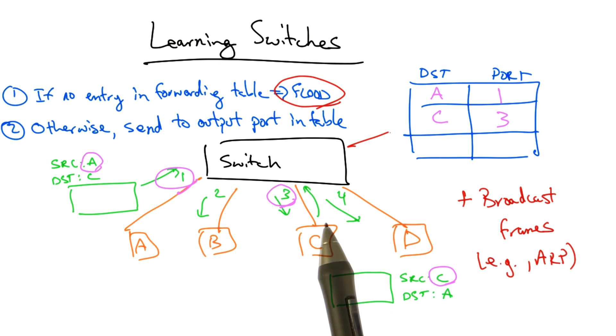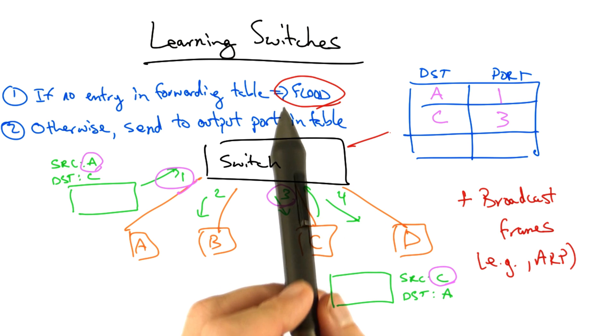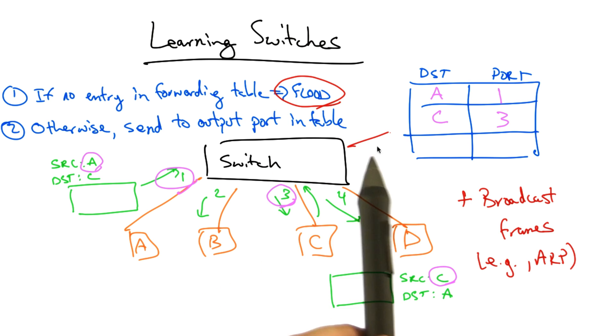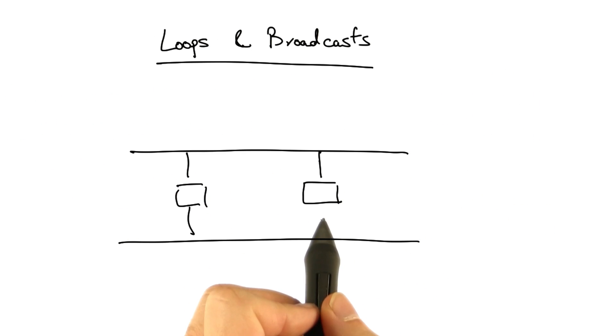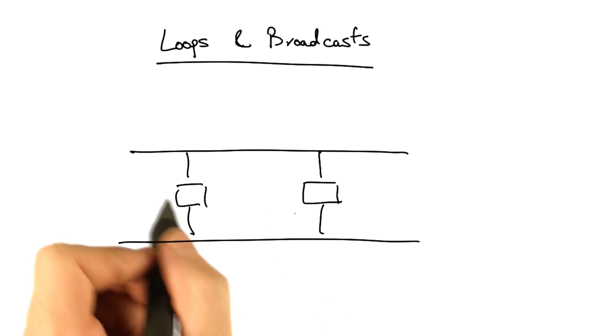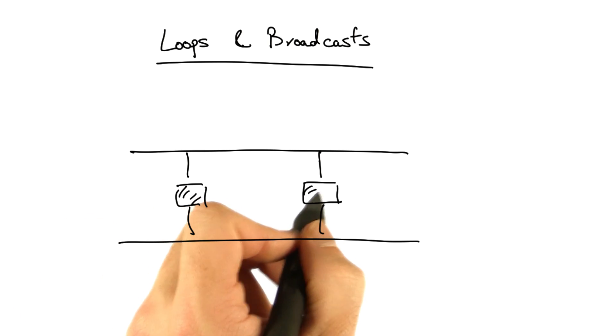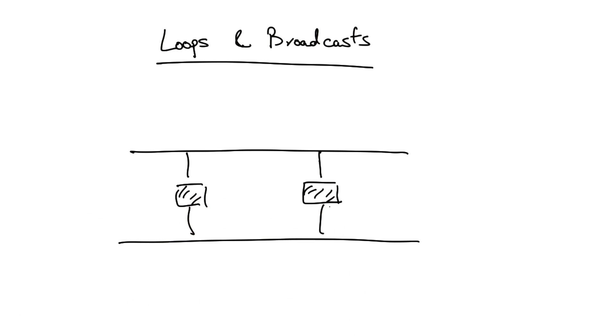Now because learning switches still sometimes need to flood, we still have to take care when the network topology has loops. Most underlying physical topologies have loops for reasons of redundancy. If any particular link fails, you'd still like hosts on the LAN to remain connected. But let's see what happens when the underlying physical topology has a loop.